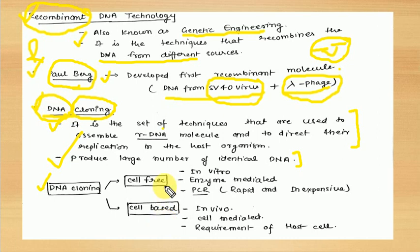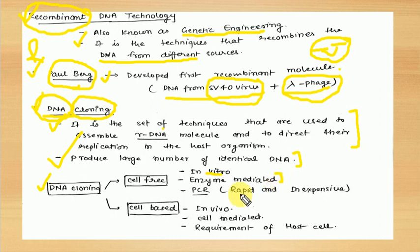Cell-free cloning — as the name suggests, it is cell-free, meaning in vitro, outside the cell. It is enzyme-mediated, meaning artificially provided enzymes are required for this cell-free DNA cloning. It is basically PCR — Polymerase Chain Reaction — which is a rapid and inexpensive method.